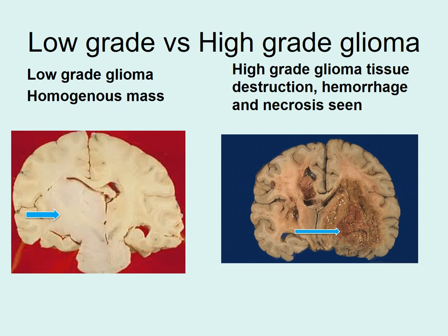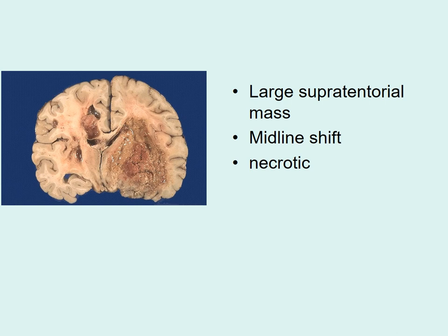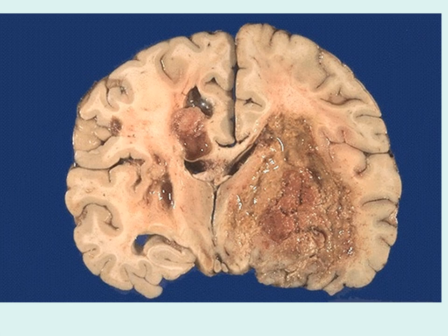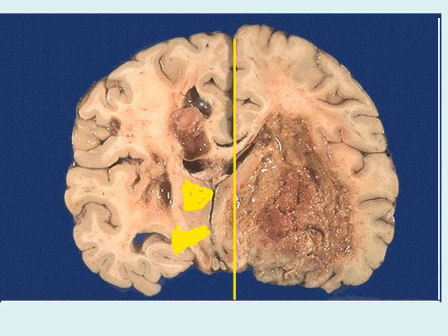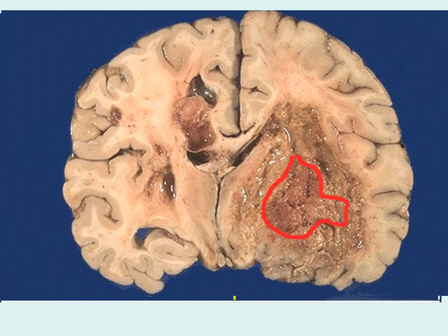In the brain there are gliomas, which can be graded as low grade and high grade. Here is a large supratentorial mass with a midline shift and necrosis. Examining this gross specimen more closely, you can appreciate the large mass pushing the brain to the opposite side. There is also a variegated appearance with different shades because the tumor undergoes necrosis. These are the features of high-grade glioma.